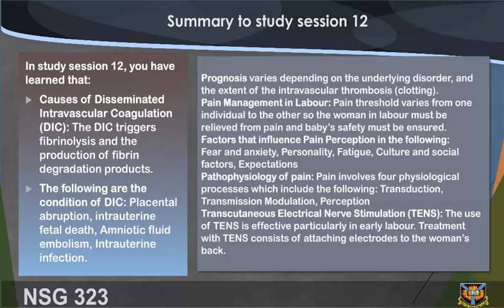Pain management in labor: pain threshold varies from one individual to the other, so the woman in labor must be relieved from pain and baby safety must be ensured. Factors that influence pain perception include fear and anxiety, personality, fatigue, culture and social factors, and expectations. Pathophysiology of pain involves four physiological processes: transduction, transmission, modulation, and perception. Transcutaneous electrical nerve stimulation (TENS) is effective, particularly in early labor; treatment consists of attaching electrodes to the woman's back. End of study session 12. Thanks for listening.